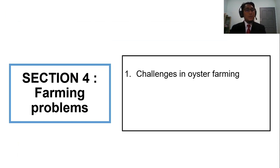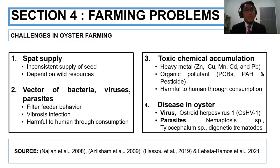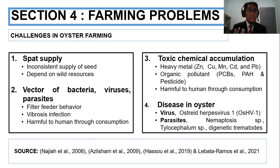Now section four regarding farming problems. There are four challenges. According to Najiyah, Azlisham, Hasao, and Lebata-Ramos, the first is regarding spat — spat is the seed in oysters. In farming we have an inconsistent supply of seed because we are dependent on wild resources. The second challenge is vector bacteria and viruses. Because the oyster is a filter feeder, it can accumulate bacteria and viruses that can be harmful to humans through consumption, causing vibriosis infection.